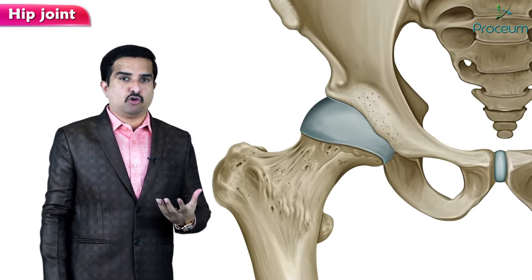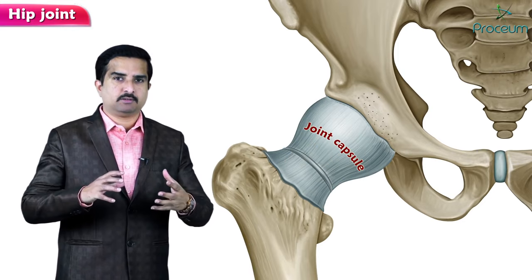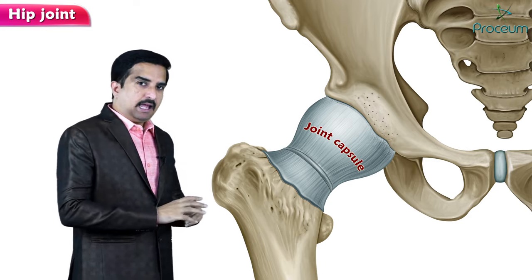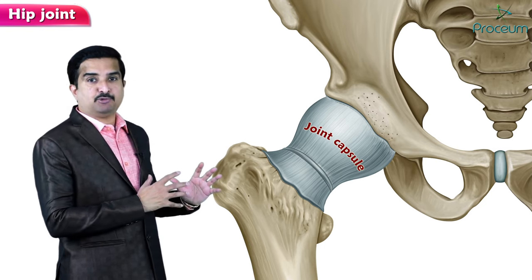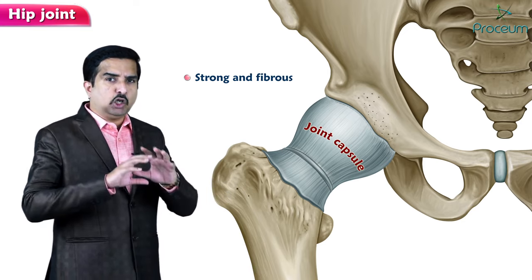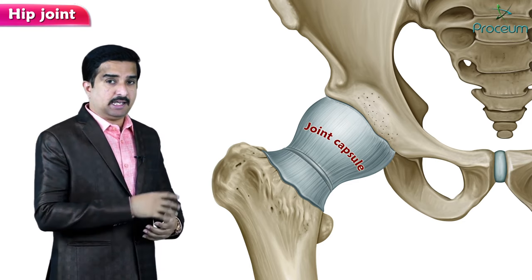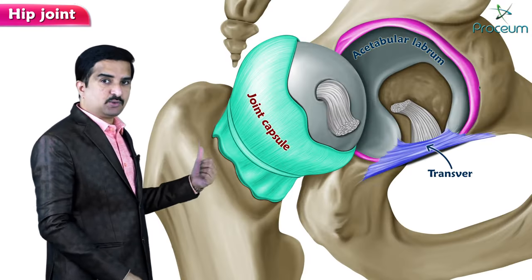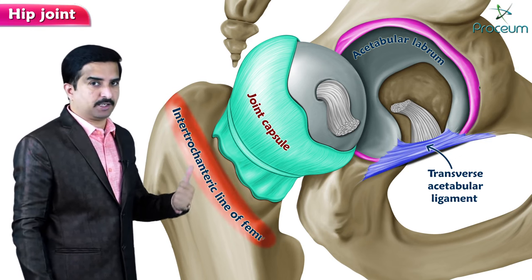Now let us concentrate on the joint capsule of the hip joint. The capsule of the hip joint is pretty strong and fibrous but loose enough to accommodate a wide range of movements. It attaches to the acetabular labrum, the transverse acetabular ligaments, and the intertrochanteric line of the femur.